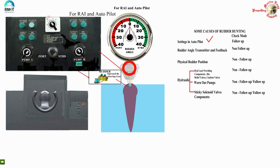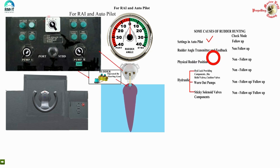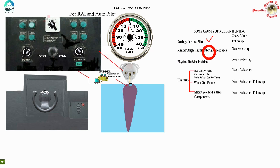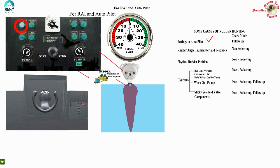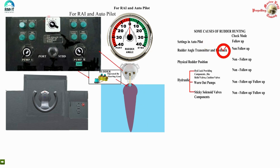Suppose we switched to follow-up mode and the rudder is still hunting. Now it is reasonable to suspect the rudder angle transmitter and feedback as a possible source. Following the same logic, I take the transmitter out of the picture by switching to non-follow-up mode. I know that in non-follow-up mode, the rudder angle transmitter stops giving signals. I go to non-follow-up - the light comes on, and the rudder has stopped hunting. So I am now sure that the cause of the trouble was the rudder angle transmitter and feedback system.